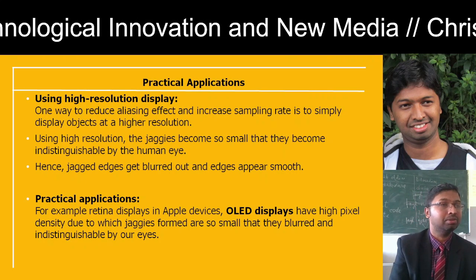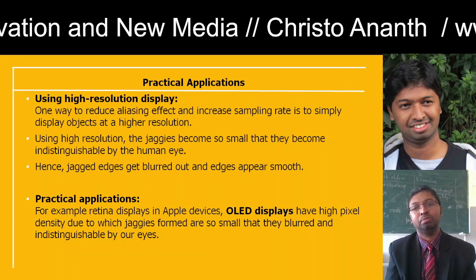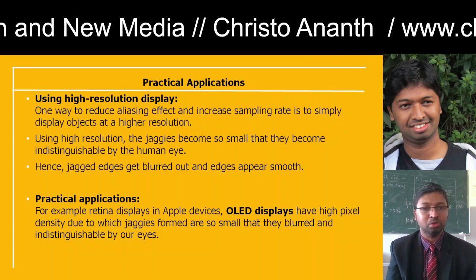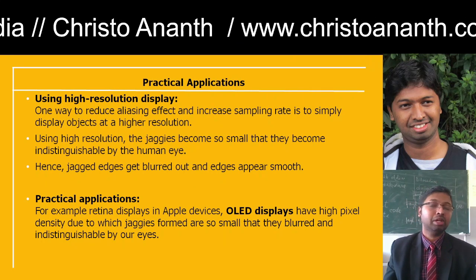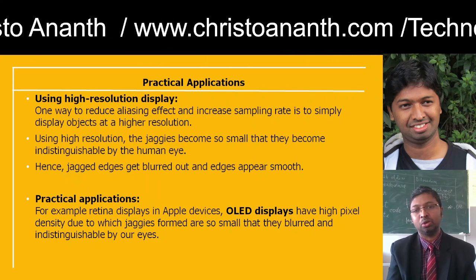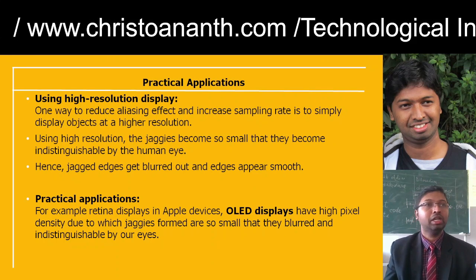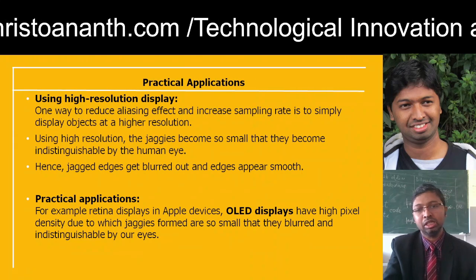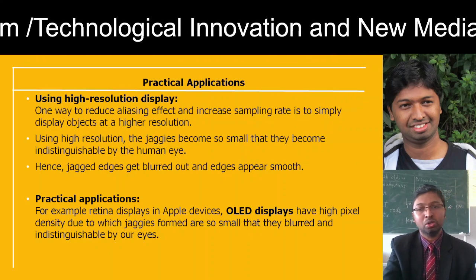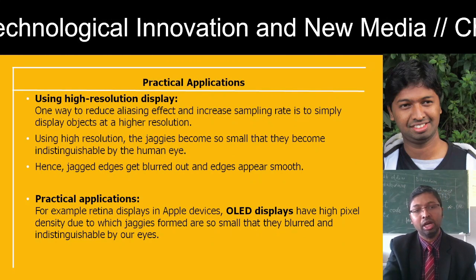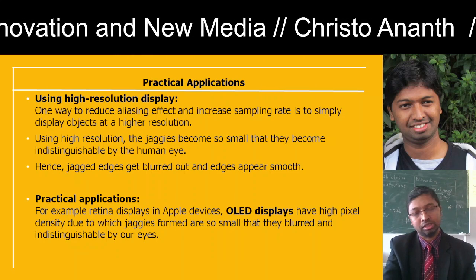With higher resolution, jagged edges get blurred out and the edges appear smooth. Retina displays, Apple devices, and OLED displays have higher pixel intensity so jaggies become blurred enough that the human eye cannot differentiate or distinguish them.